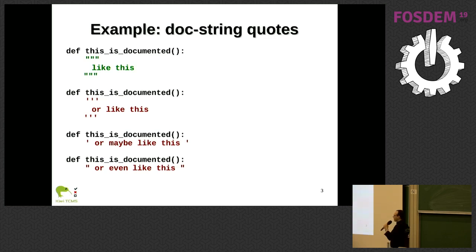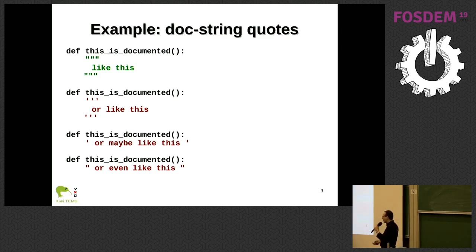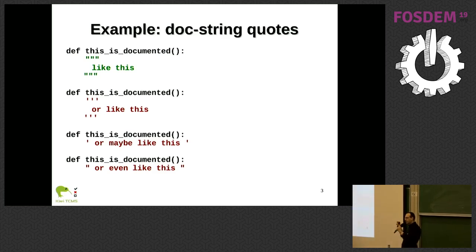One use case is you want to enforce a particular coding style. This can be something not valid for the broader Python community — only valid for your own company, your team, or the current project. In Kivity CMS, an open source project I work on, we like to use documentation strings with three double quotes and don't like the other styles, which are perfectly valid Python. We have a customized PyLint plugin that enforces this for us.